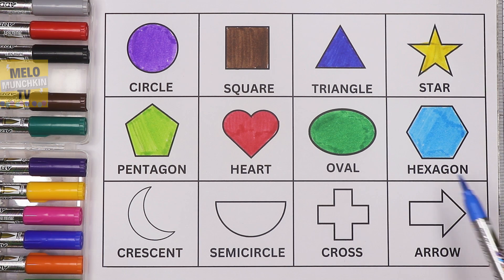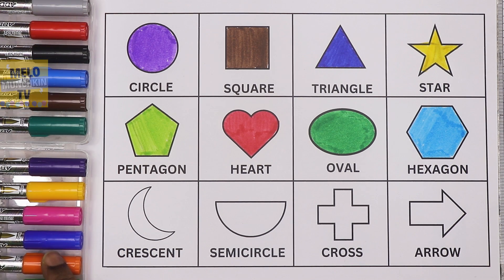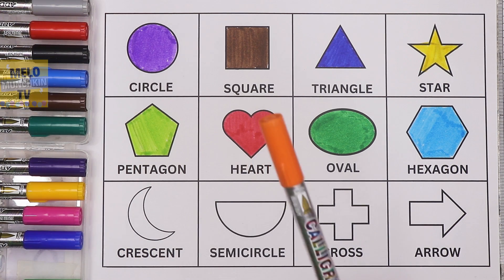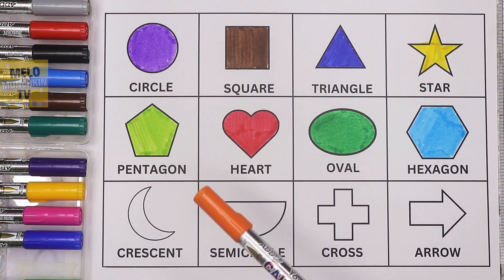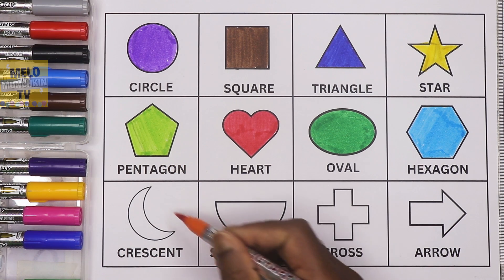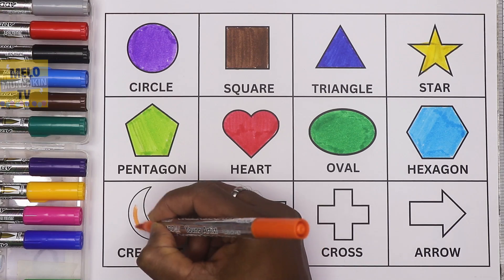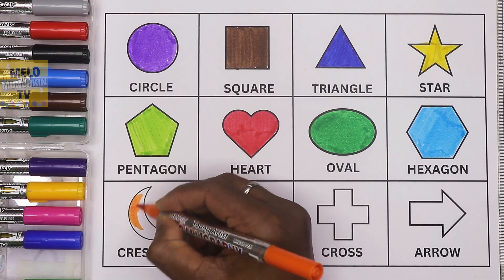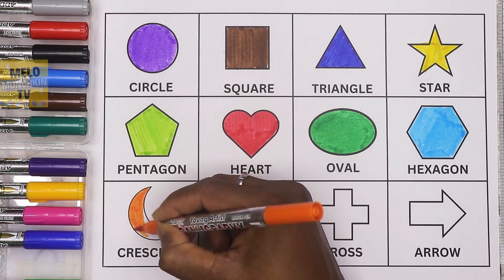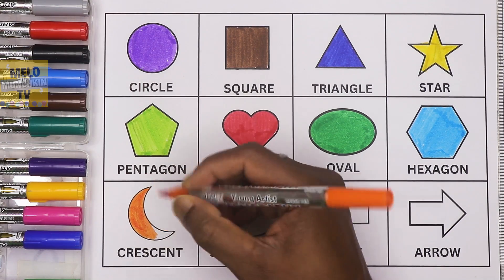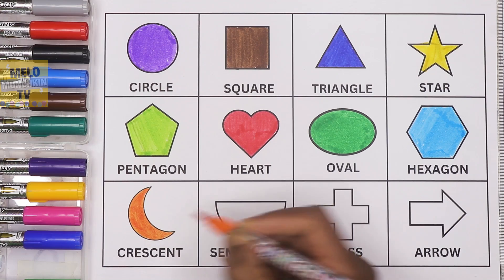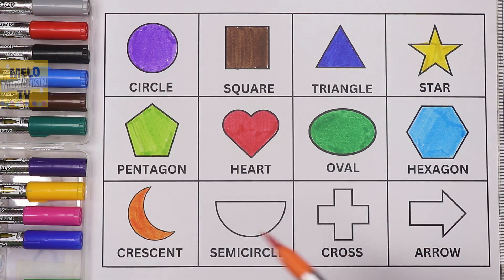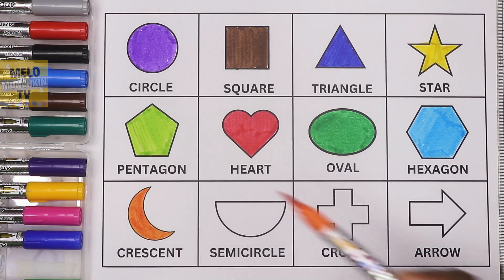So this is now a blue hexagon. Now I'll take orange color — this color is called orange — to color this shape. This is a crescent. So now it is an orange crescent.